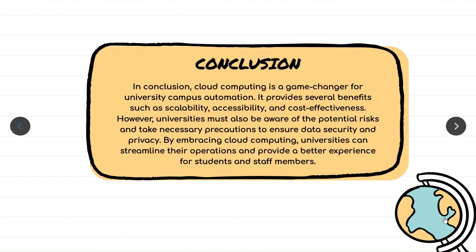Conclusion. In conclusion, cloud computing is a game-changer for university campus automation. It provides several benefits such as scalability, accessibility, and cost-effectiveness. However, universities must also be aware of the potential risks and take necessary precautions to ensure data security and privacy. By embracing cloud computing, universities can streamline their operations and provide a better experience for students and staff members.